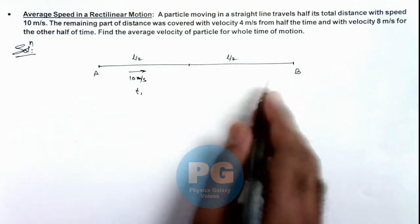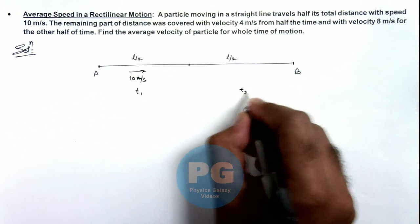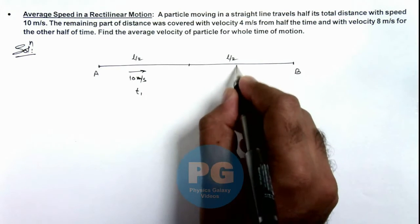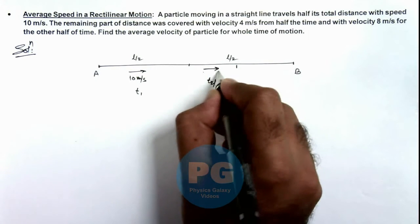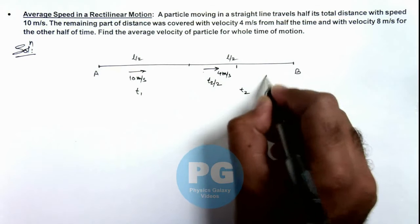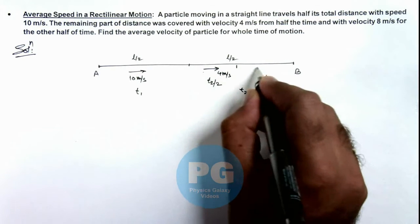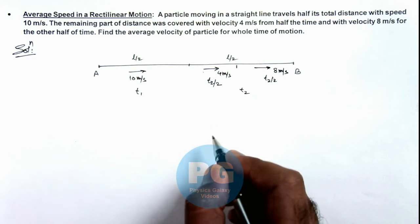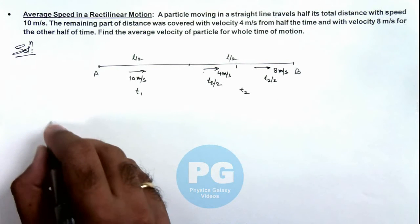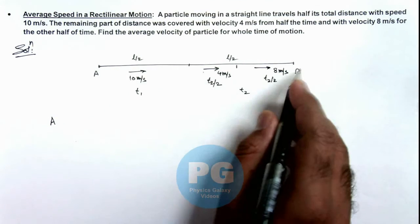And the remaining half, say if it takes a time t2, we are given that for a time t2 by 2 it is traveling at a speed of 4 meters per second. For the remaining time t2 by 2, it is traveling at a speed of 8 meters per second. We are required to find the average velocity of the particle in the whole journey.